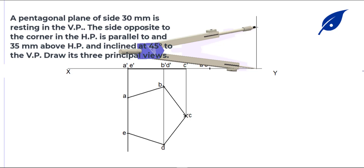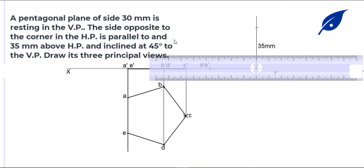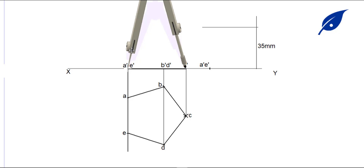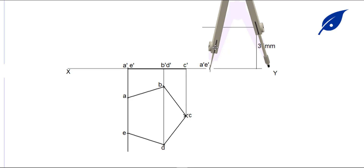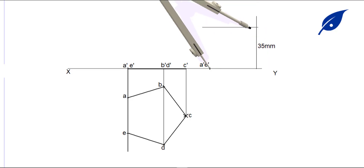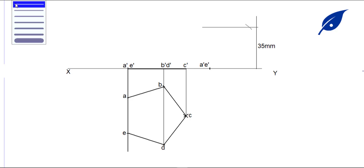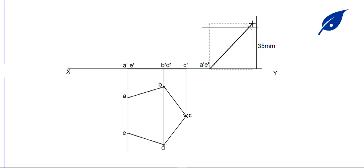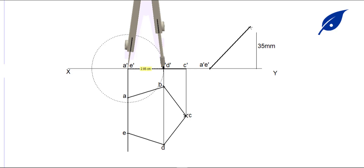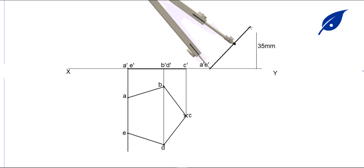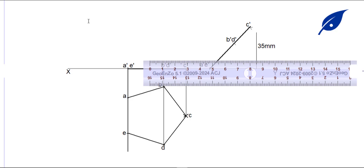We mark point A-dash E-dash, then get the distance — 5 millimeters — parallel to the horizontal plane. We take the measurement from A-prime E-prime to C-prime, describe an arc where it touches that line, and connect from that point back to our starting point to get the required distance. We then measure from A-prime to B-dash D-dash and transfer that distance to the line.